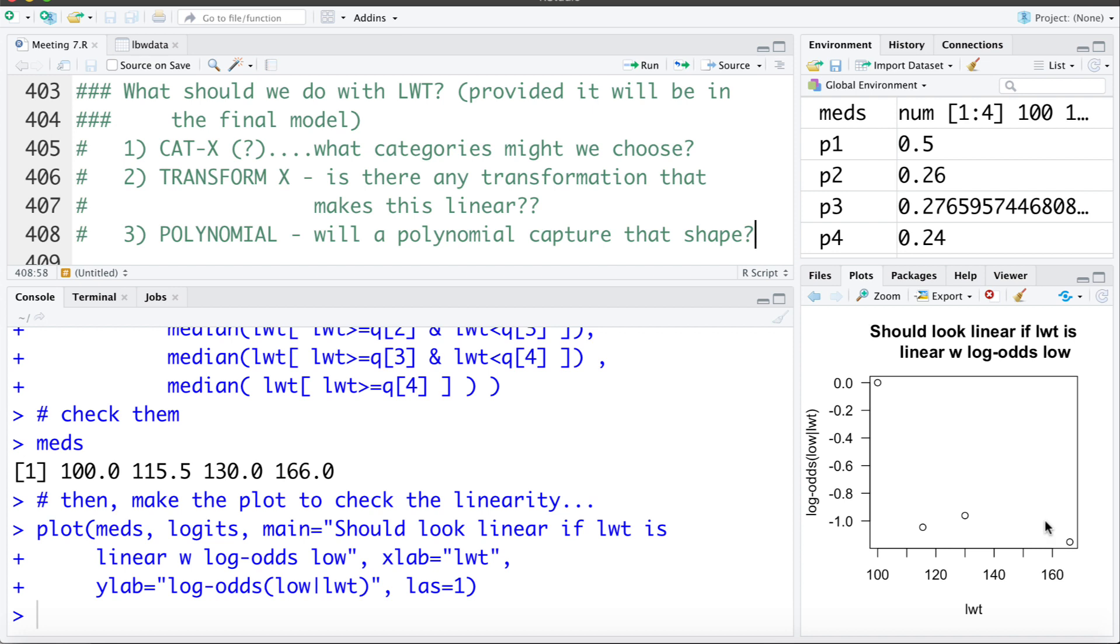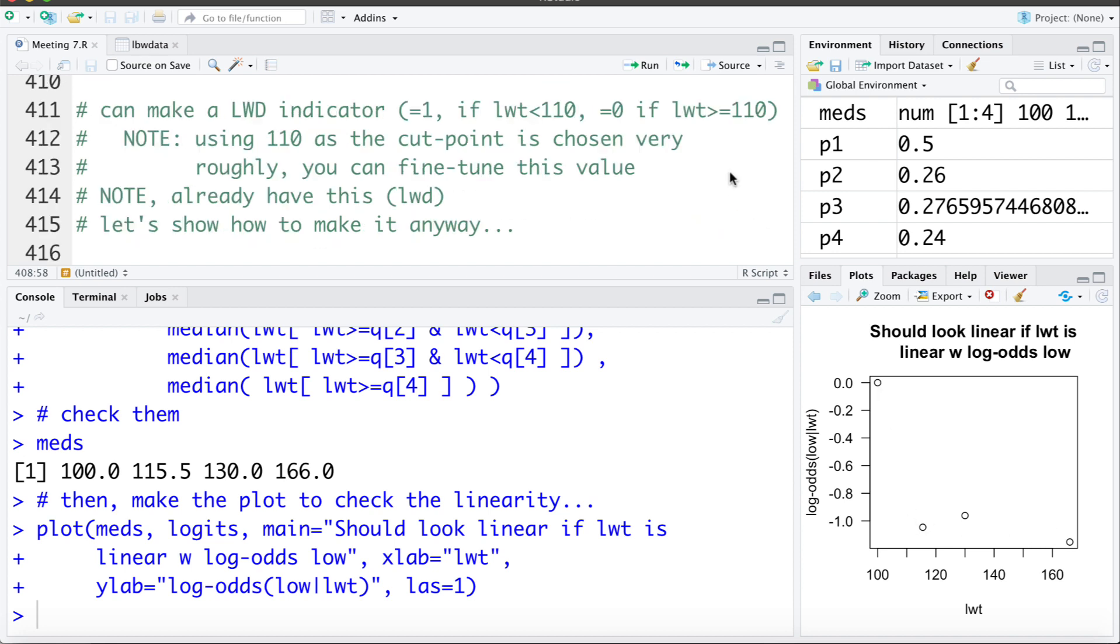So what we'll look at doing is making an indicator variable. And that's going to look at is the weight less than 110. It's going to take on a value 1 if it is, 0 if it's not. So it's going to be an indicator of low weight.